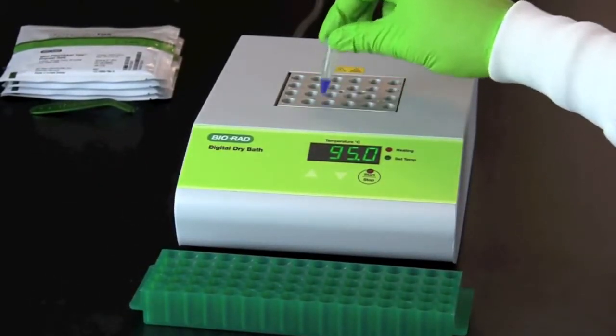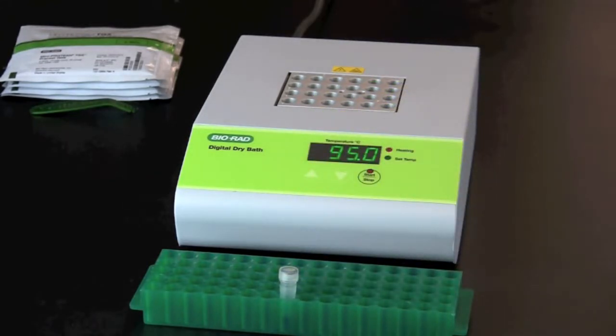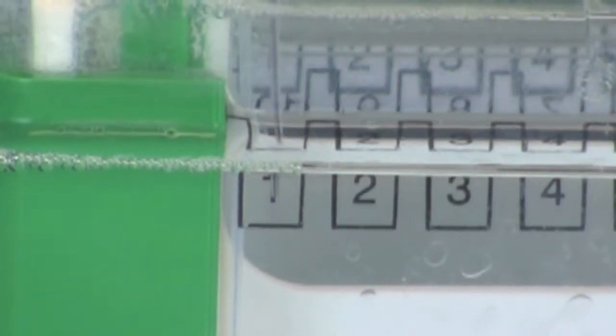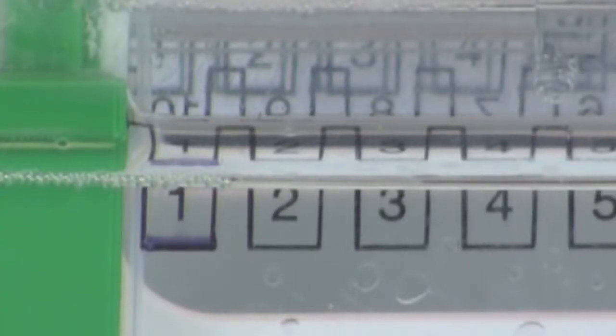Heat the fish sample and actin and myosin standard to 95 degrees Celsius for 2 to 5 minutes. Using a gel-loading pipette tip, pipette 5 microliters of Precision Plus protein kaleidoscope standards in lane 1. In the remaining lanes, load 10 microliters of fish samples.